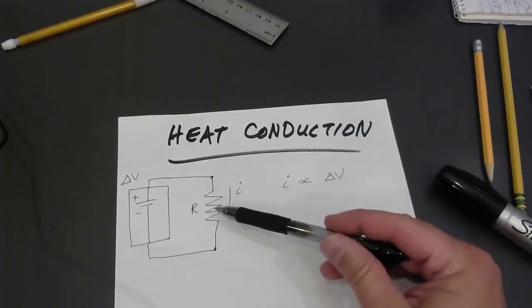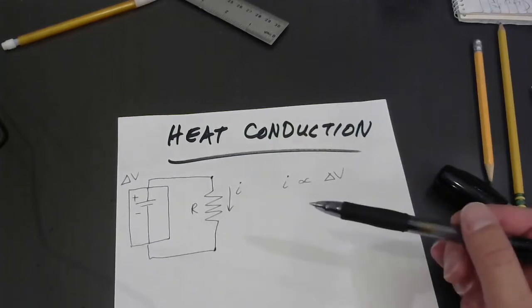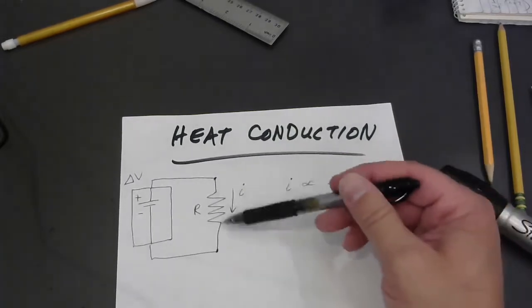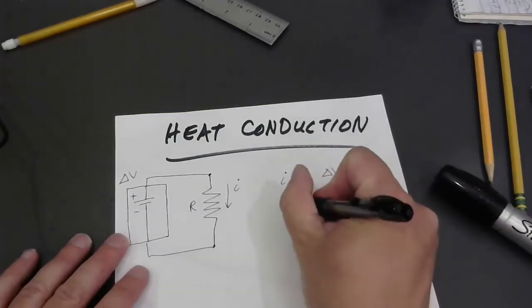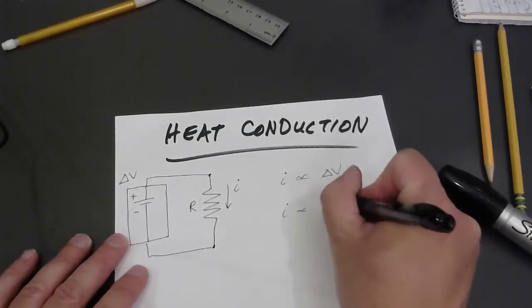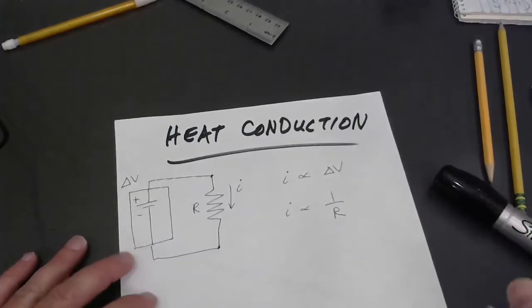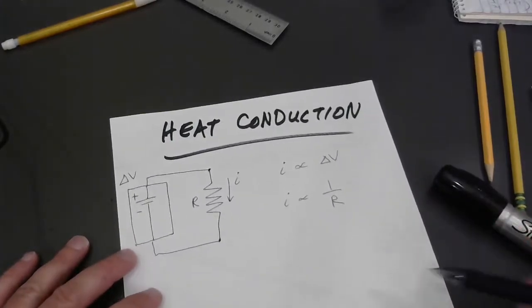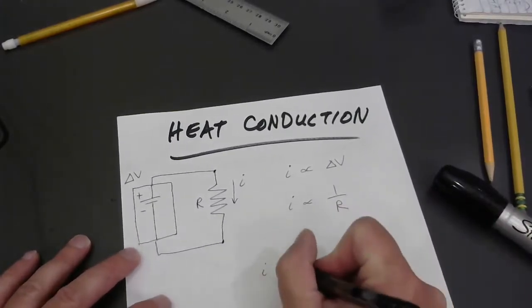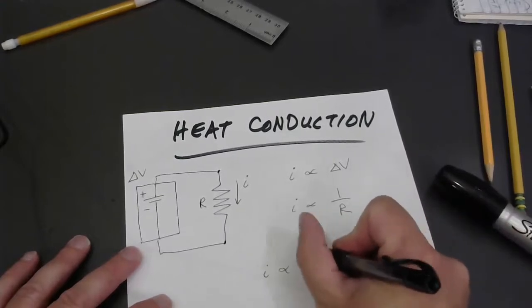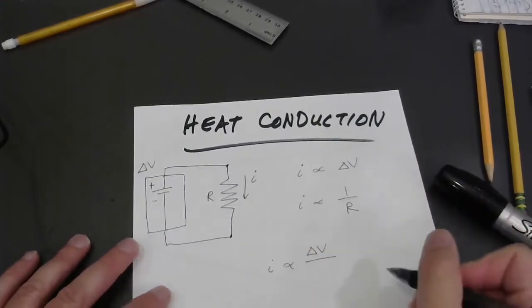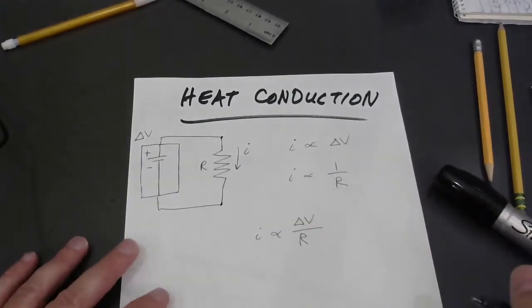We know that as resistance goes up, current goes down. If you put three times as much resistance in here, you would expect one-third the current. In other words, current is proportional to the reciprocal resistance. Of course, you can put those two together and say simultaneously that current is proportional to potential difference divided by resistance.